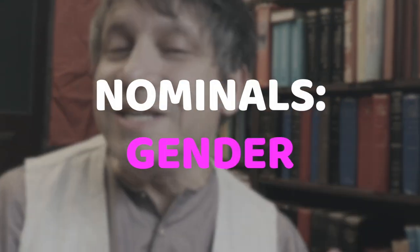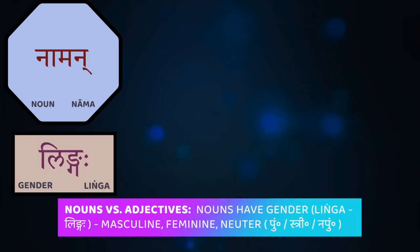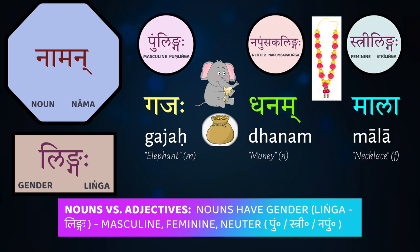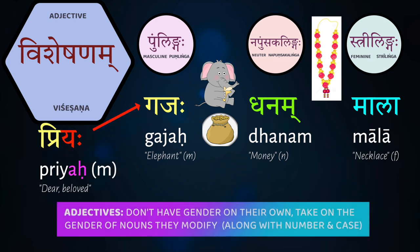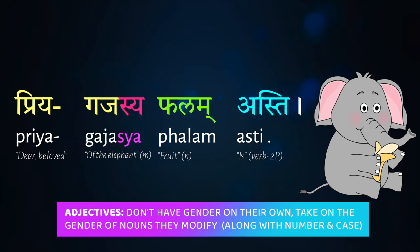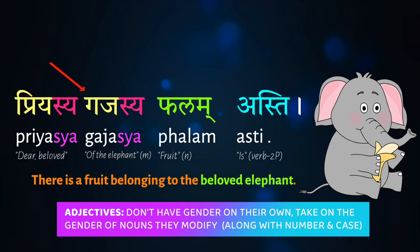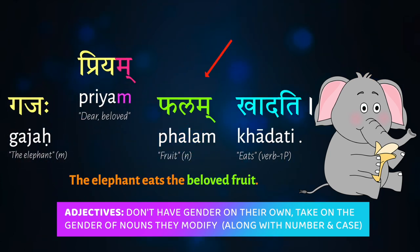To start with, let's return to the key difference between nouns and adjectives — 'namas' and 'visheshanas' — in Sanskrit. Every noun has a gender, one of three genders, called three 'lingas': masculine, feminine, and neuter. Adjectives don't have a gender by themselves; instead they assimilate — they take on the gender of whatever noun they're modifying in the sentence. Aside from that, the vast majority of adjectives function just like nouns: they get declined according to case and number, matching the noun they go with.